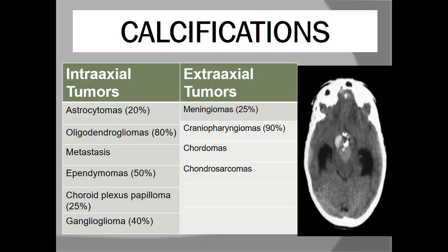Calcifications can be seen on X-ray or CT scan but not on MRI. For intra-axial tumors with calcification, we suspect astrocytoma (20%), oligodendrogliomas (80%), metastases, and ependymomas (50%). Choroid plexus papillomas and gangliogliomas can also show calcification. For extra-axial tumors, meningiomas have 25–30% calcification, craniopharyngiomas have almost 90%, and chordomas and chondrosarcomas can also show calcification.